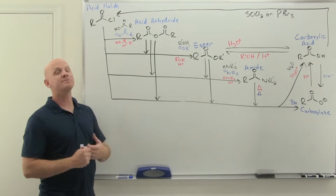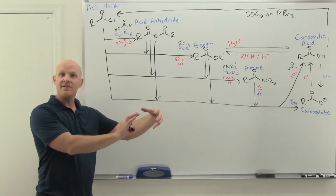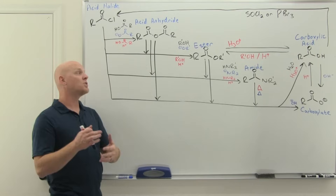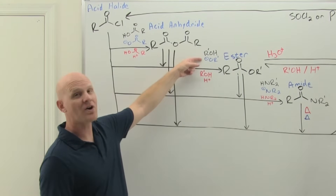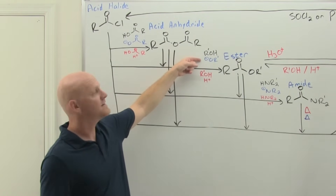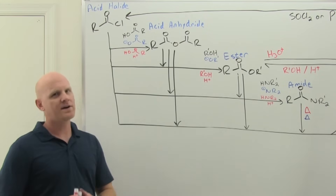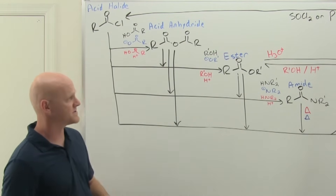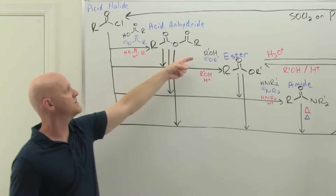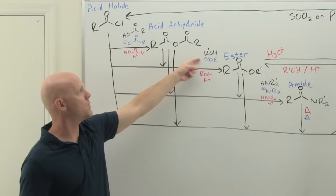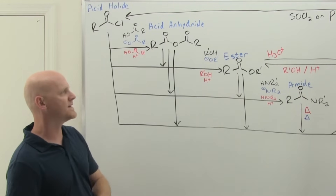We already brought up transesterification in the synthesis of an ester. Because you're turning an ester into an ester, transesterification is also a reaction of esters. To do transesterification and turn one ester into another, you add the appropriate alkoxide ion to your reactant ester, or add the appropriate alcohol with acid. You can also make a carboxylic acid from an ester — to do so you need acid catalysis with H3O+ to make the carboxylic acid, and base-catalyzed hydroxide would make the carboxylate.